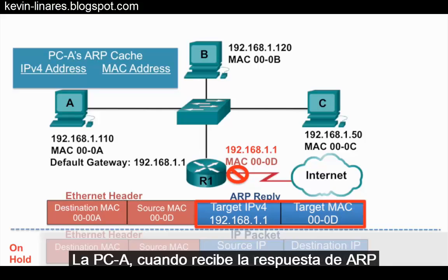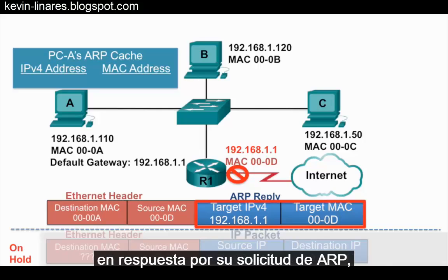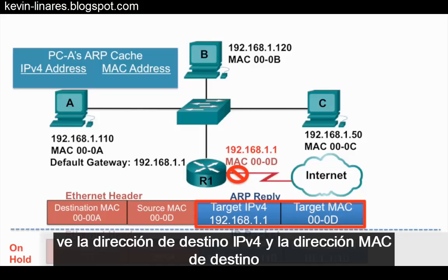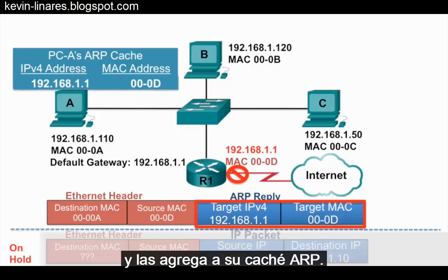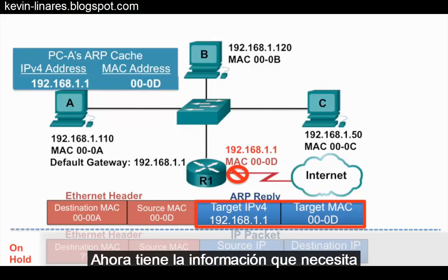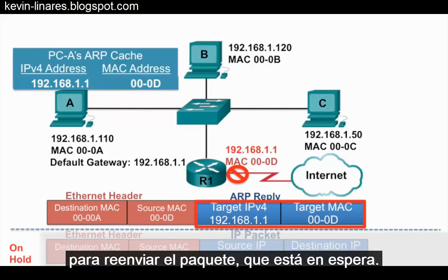PCA, when it receives the ARP reply in response to its ARP request, sees the target IPv4 address and the target MAC address, and adds that to its ARP cache. It now has the information it needs to forward the packet, which is on hold.